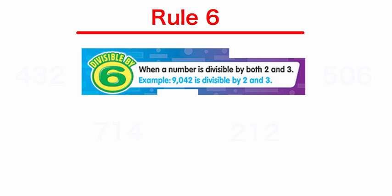Rule number 6 says that when a number is divisible by both 2 and 3, it's going to work for 6. For example, 9,042 is divisible by 2 because it's an even number ending in a 2. To check for 3, we add the digits: 9 plus 0 plus 4 plus 2 — 9 plus 4 is 13, plus 2 is 15. 15 divided by 3 is 5. Since this number is divisible by both 2 and 3, it is also divisible by 6.